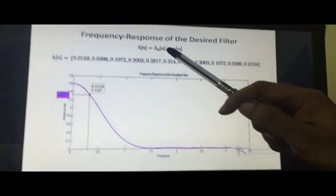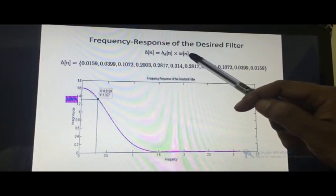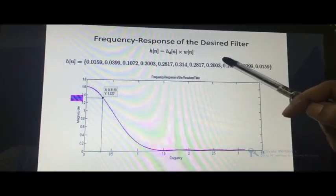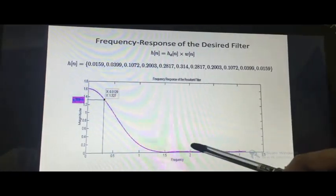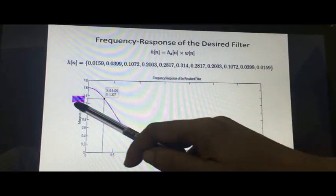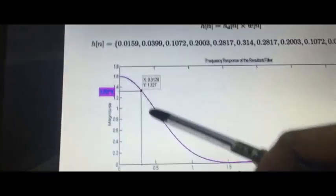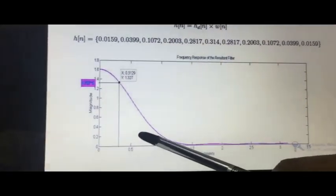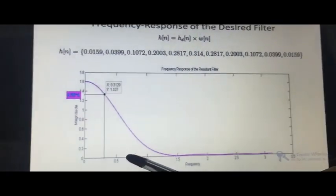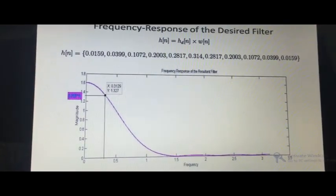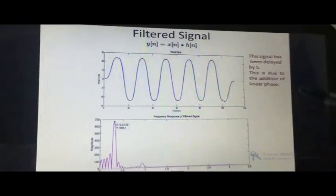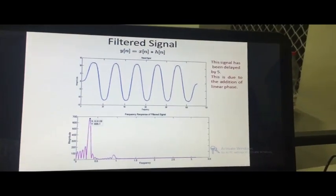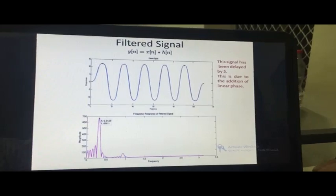Multiplying the desired filter coefficients with the selected Hamming window function gives us the final windowed filter coefficients. Taking the Fourier transform of these yields the final frequency response. We can observe that taking 0.707 of the peak gives a cutoff frequency of 0.3129, which we can consider approximately equal to 0.314 — confirming our specification. The digital FIR filter has been successfully designed using the Hamming window with cutoff frequency 50 hertz and filter length N = 11.